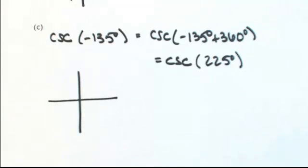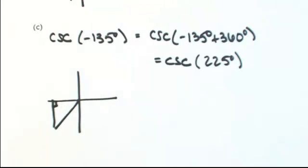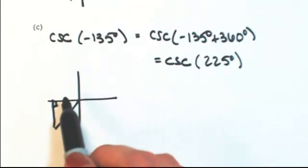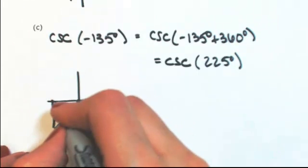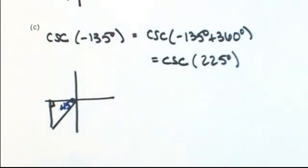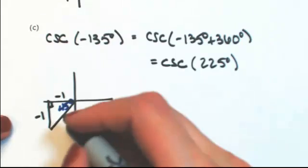So I'm going to draw 225, which would be in the third quadrant. Take that back up to the x-axis. Half of our revolution is 180, so that another 45 gives us that 225. So because we're in the third quadrant, opposite and adjacent will both be negative 1. Hypotenuse is square root of 2.